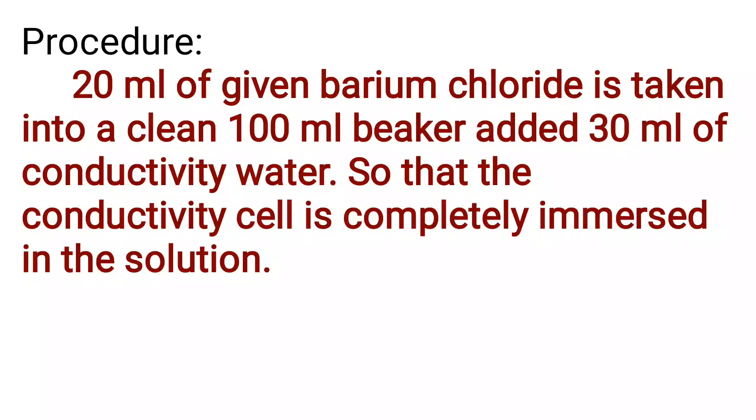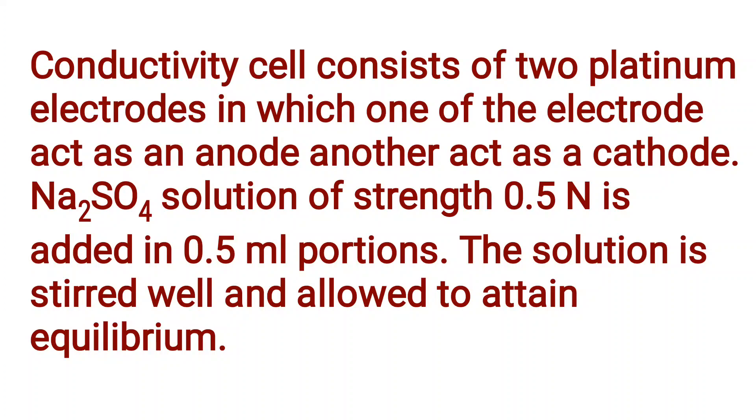Next, come to the procedure. 20 ml of this solution is pipetted out into a clean 100 ml beaker and added 30 ml of conductivity water. Then the conductivity cell is completely immersed into the solution. Conductivity cell consists of two platinum electrodes in which one of the electrode acts as the anode, another acts as the cathode.